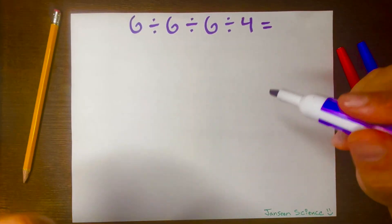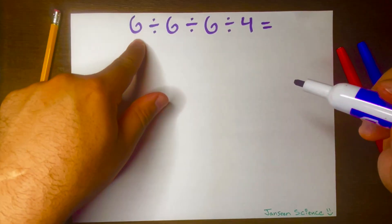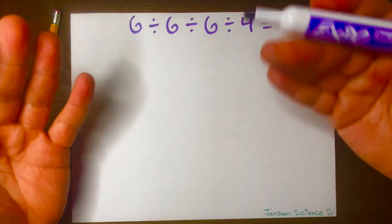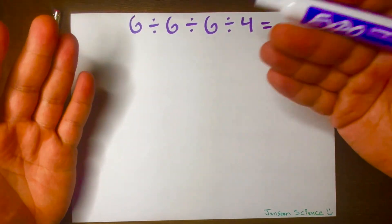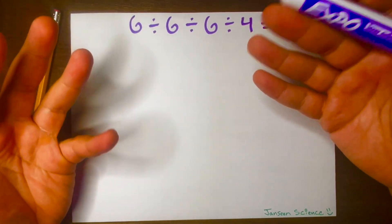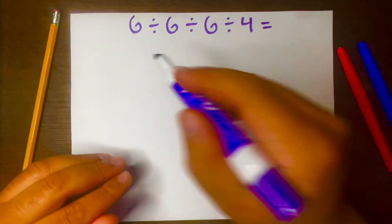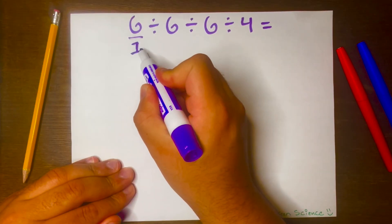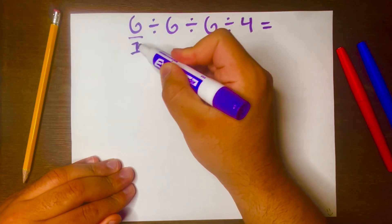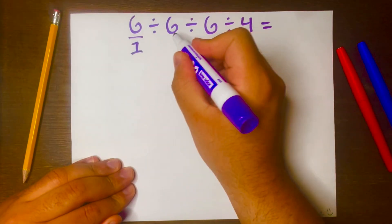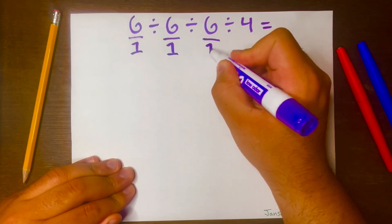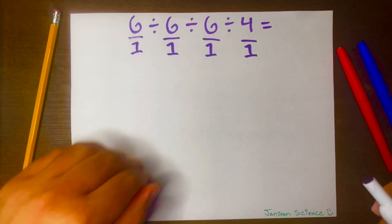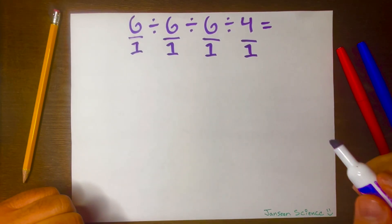The first thing I need to do is turn these whole numbers into fractions, because we know that any whole number can be written as a fraction just by putting the whole number over 1. So 6 can be written as 6 over 1, because if you divide 6 by 1, it gives you 6. So let's go ahead and make all these whole numbers into fractions.